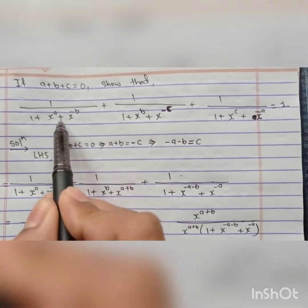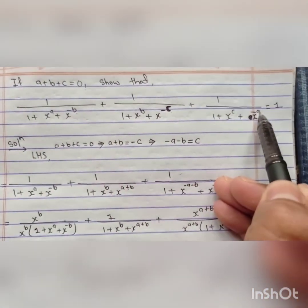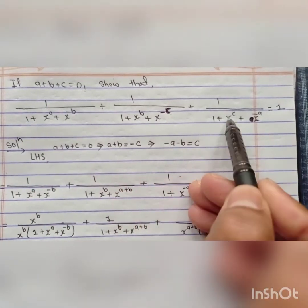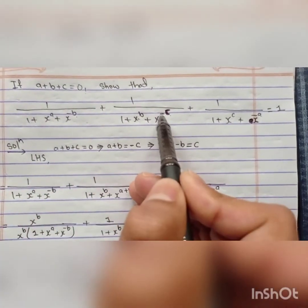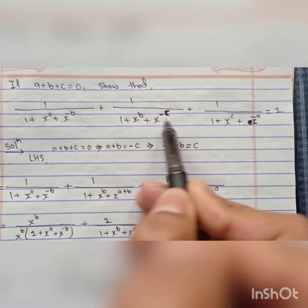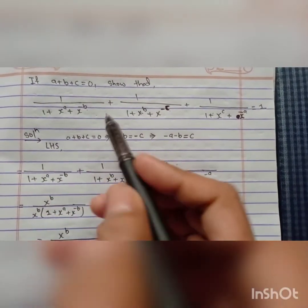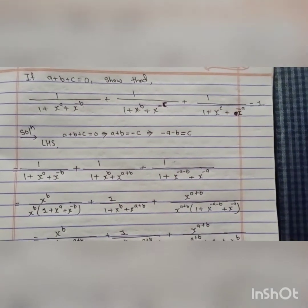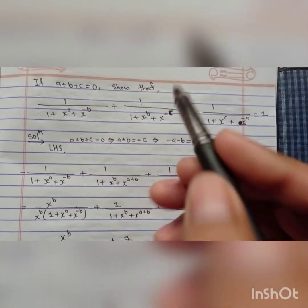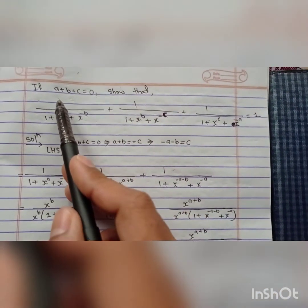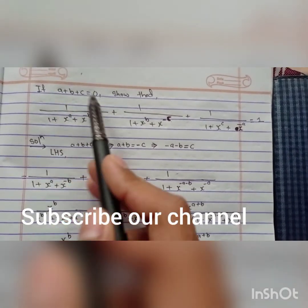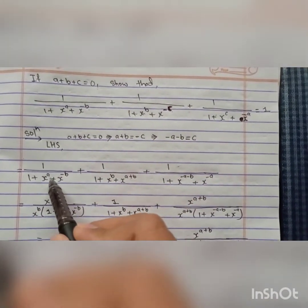Here a, b, c are in the power, meaning there are three variables in the power form. There are three types of variables in the power form, but we have to keep only two variables in the power form. This means you can keep either a and b, or b and c, or a and c. I have kept here a and b in the power form.